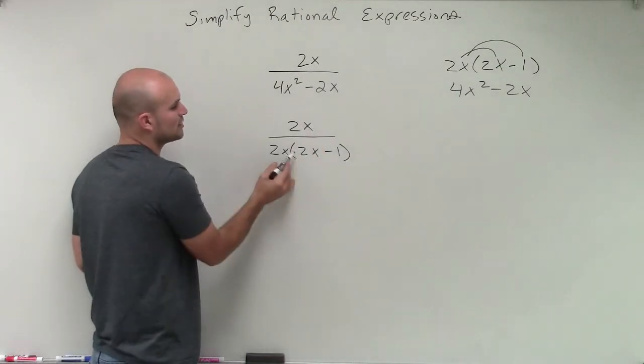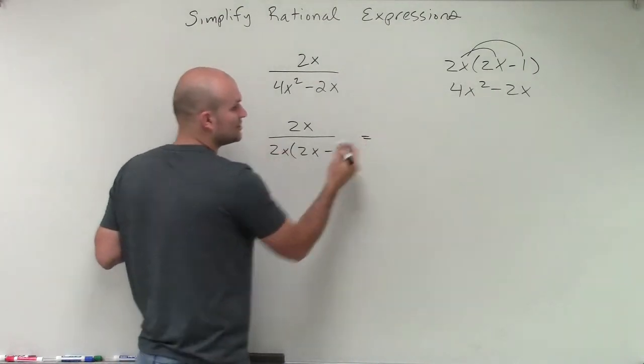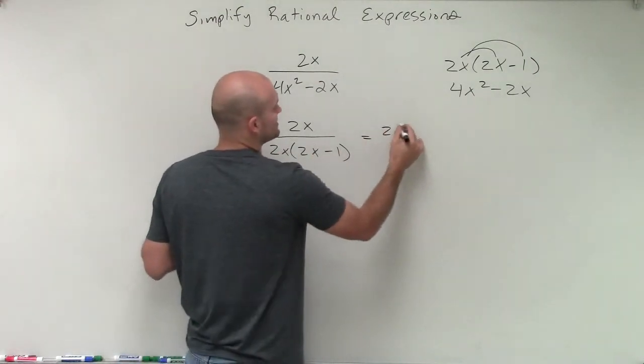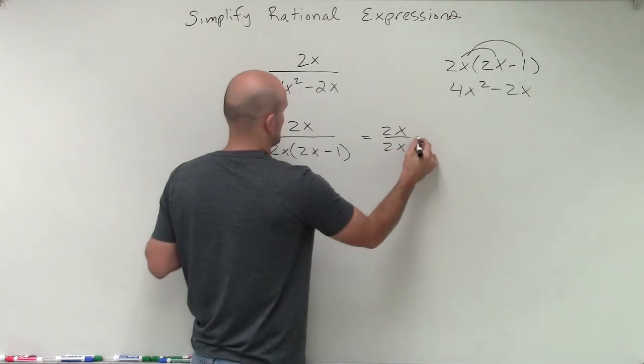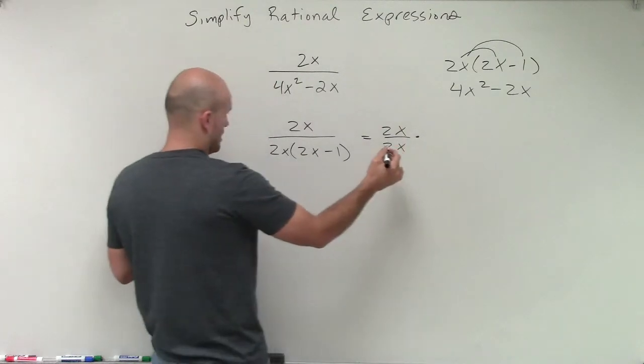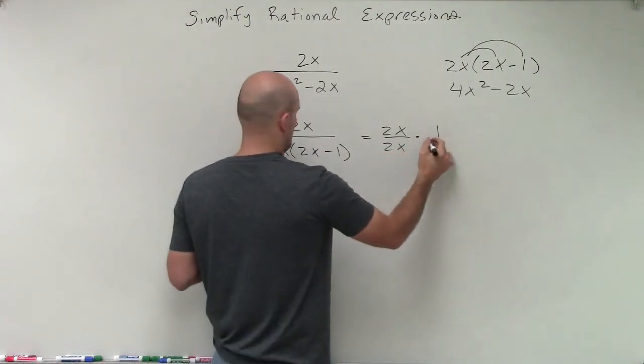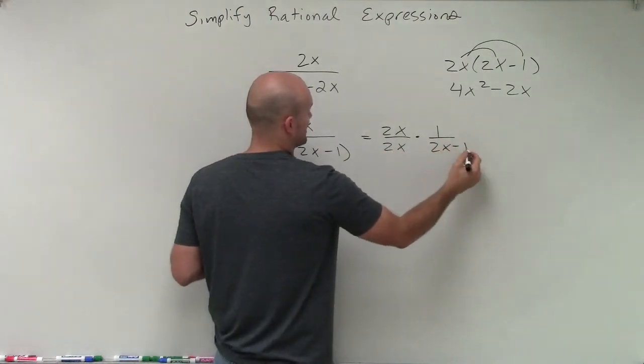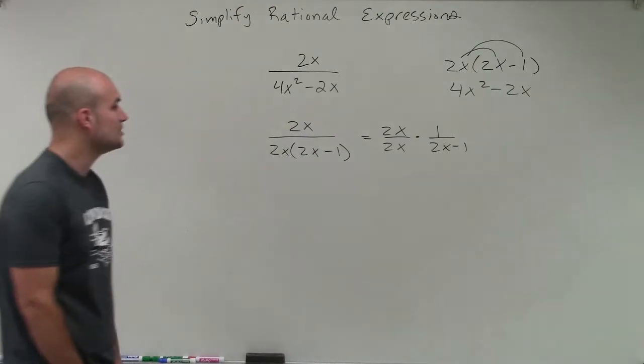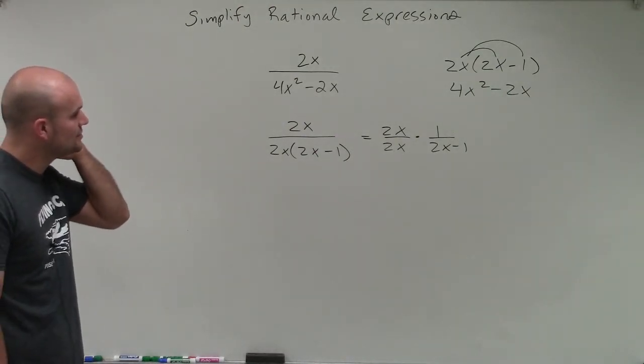Now you can see that I'm across multiplication. So now I can break this up. So if I wanted to, you don't have to, but you could break this up as 2x over 2x times 1 over 2x minus 1. So now what we can do is we can break this up into our multiplication.